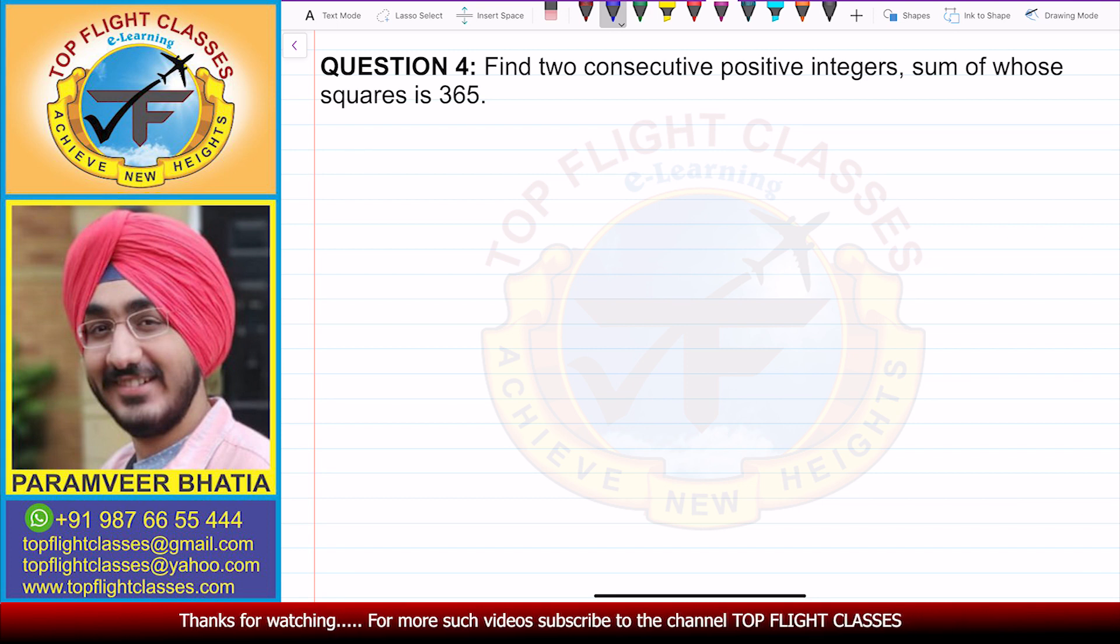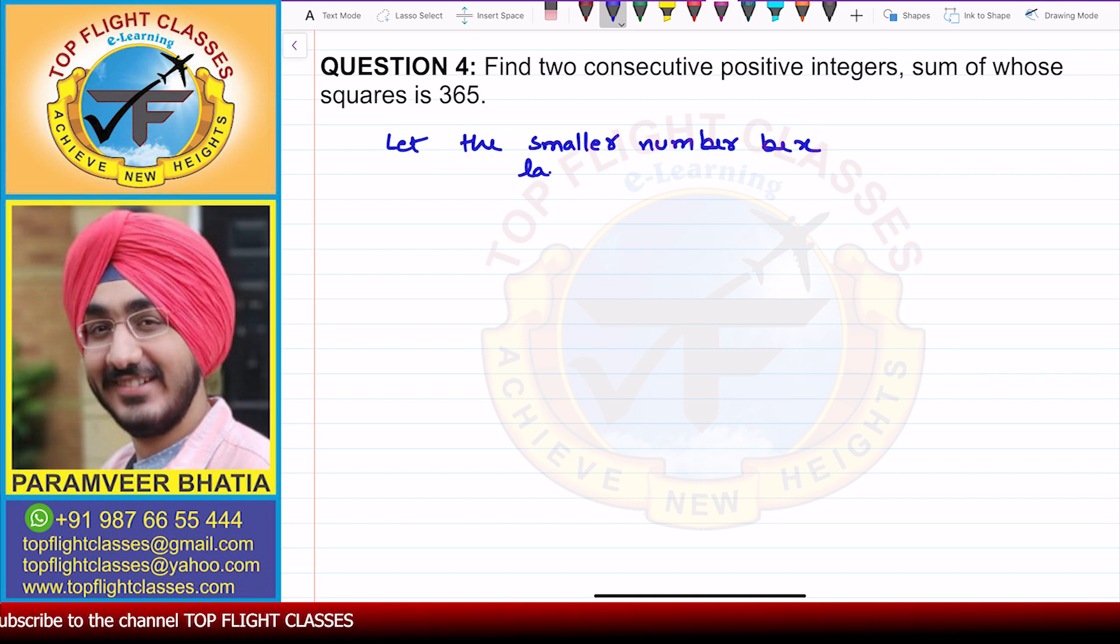First, we take one number, the smaller number to be x. So let the smaller number be x and the larger number, what will happen? Because there are consecutive numbers. That means if one number is x, the other number is x plus 1 or x minus 1. Now since x is the smaller number, what will happen? x plus 1.